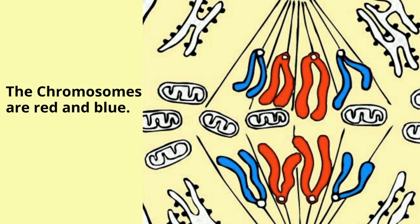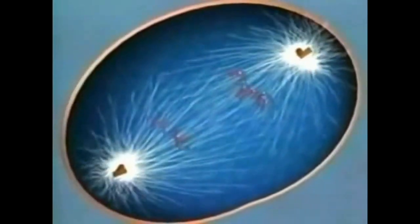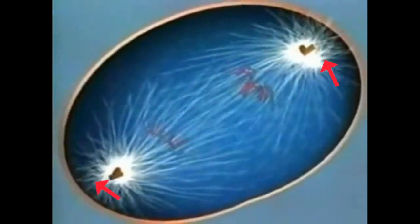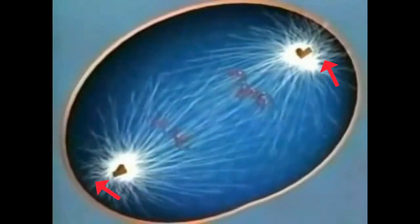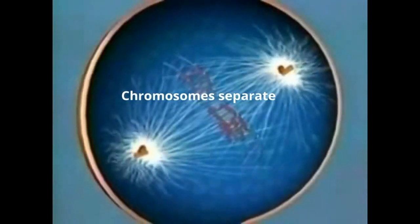The chromosomes of each pair are pulled towards opposite ends of the cell. Microtubules not attached to chromosomes elongate and push apart, separating the poles and making the cell longer.